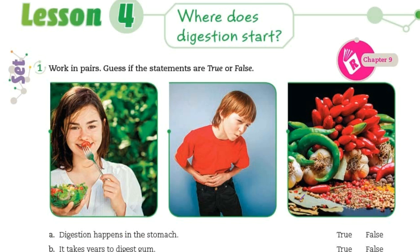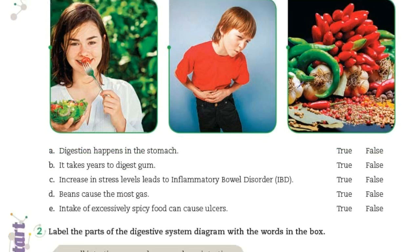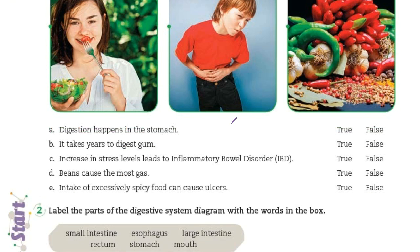Working in pairs, guess if the statements are true or false — vamos a ver si son falsos o verdaderos. Letter A: Digestion happens in the stomach. La digestión pasa o sucede en el estómago. True or false?